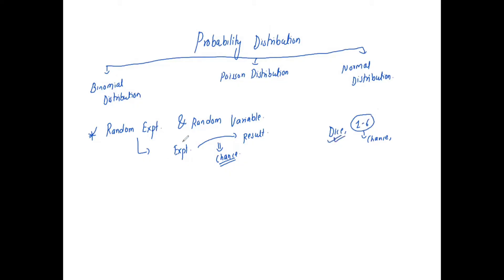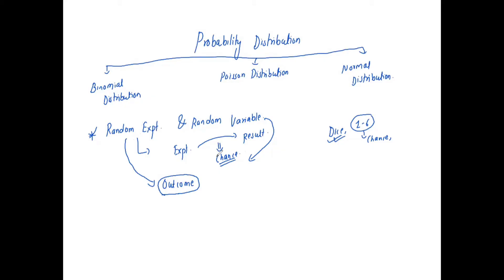The second concept is the random variable. A random variable is a variable whose value is determined by the outcome of a random experiment.